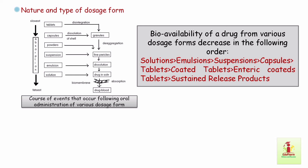Soft capsules dissolve faster than hard gelatin capsules and show better drug bioavailability. Particle size and the nature of diluents and fillers may influence absorption from capsules. The compressed tablet is the most widely used dosage form and is the most convenient, but it also presents the most difficult problem with respect to availability of a drug for absorption.